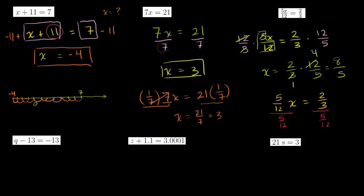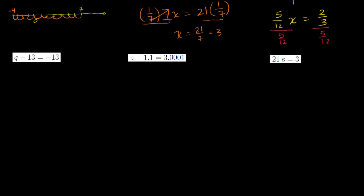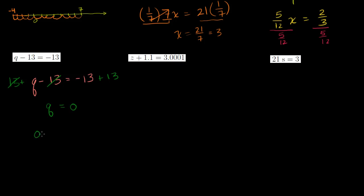The variable isn't always x — we can solve for q, z, s, or anything. So: q minus 13 is equal to negative 13. We want to isolate q. If we add 13 to both sides, the negative 13 and positive 13 on the left cancel out, and on the right, negative 13 plus 13 is 0. So q is equal to 0. We can check: 0 minus 13 is indeed negative 13. It works.